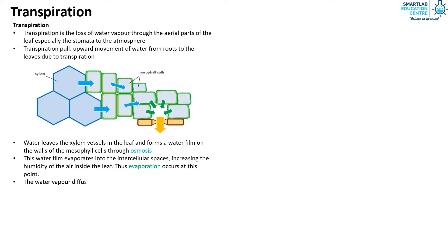The water vapor diffuses down the concentration gradient from the inside of the leaf to the atmosphere through the stomata, and diffusion occurs at this point. This process of losing water through aerial parts of the plant is known as transpiration.